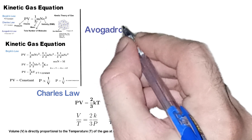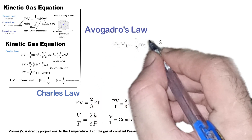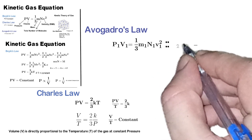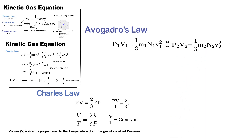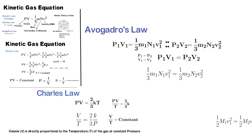Now, for deriving Avogadro's law, let's consider we have two gases. For gas 1, the pressure is denoted by P1, volume by V1, mass by M1, number of molecules by N1, and velocity squared by V1². For gas 2, pressure is P2, volume is V2, mass is M2, number of molecules N2, and velocity V2. Let's consider both gases have the same pressure and the same volume, meaning P1 = P2 and V1 = V2. Since P1V1 = P2V2, the right-hand sides are equal, giving us 1/3 M1N1V1² = 1/3 M2N2V2².